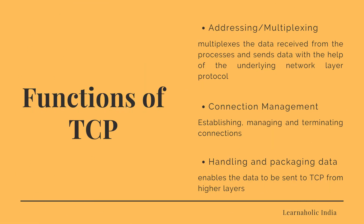Now let's see the functions performed by the Transmission Control Protocol. First is addressing or multiplexing. Higher layer application processes are determined through TCP ports. This layer mainly multiplexes the data received from various processes and sends data with the help of the underlying network layer protocol.